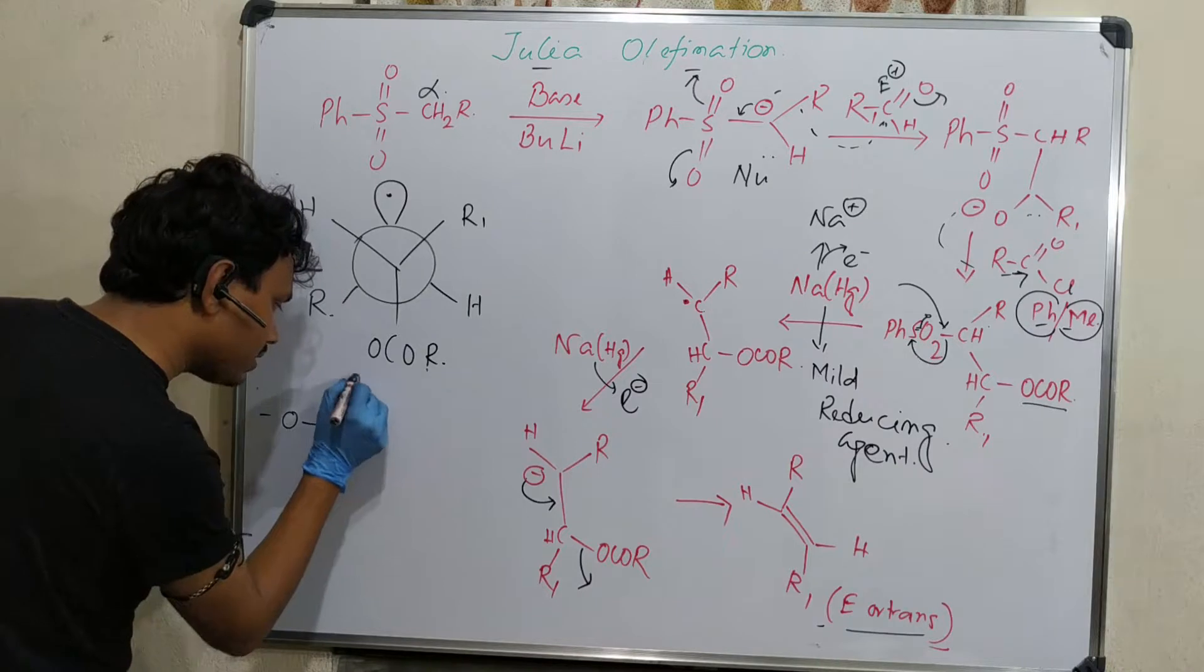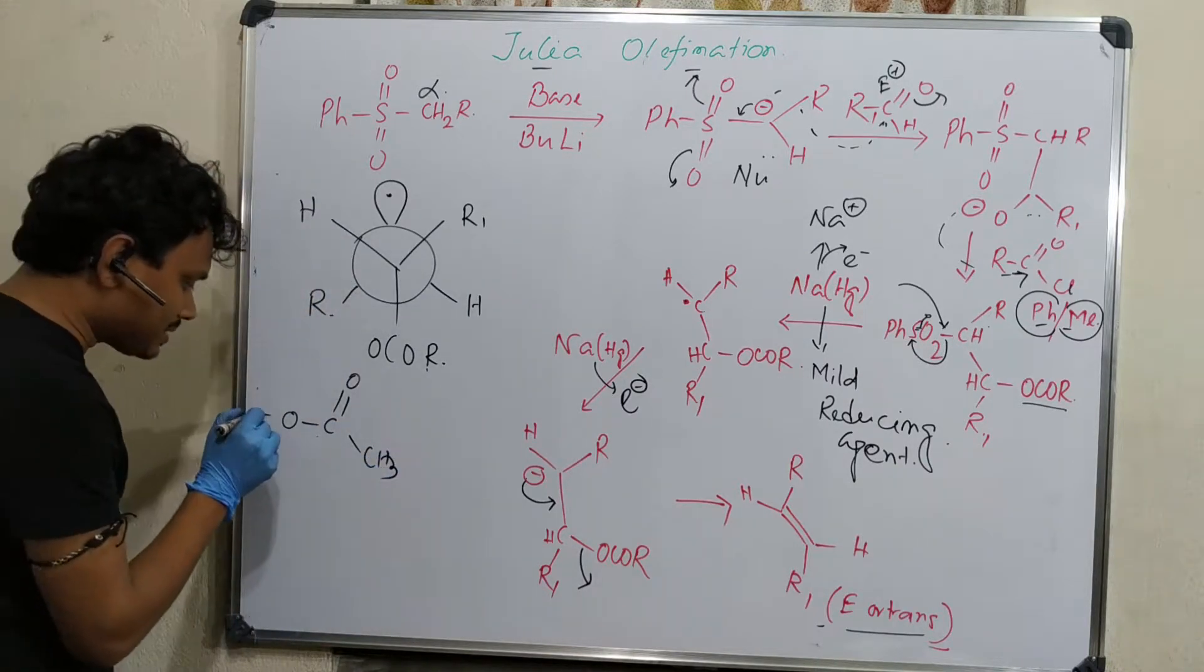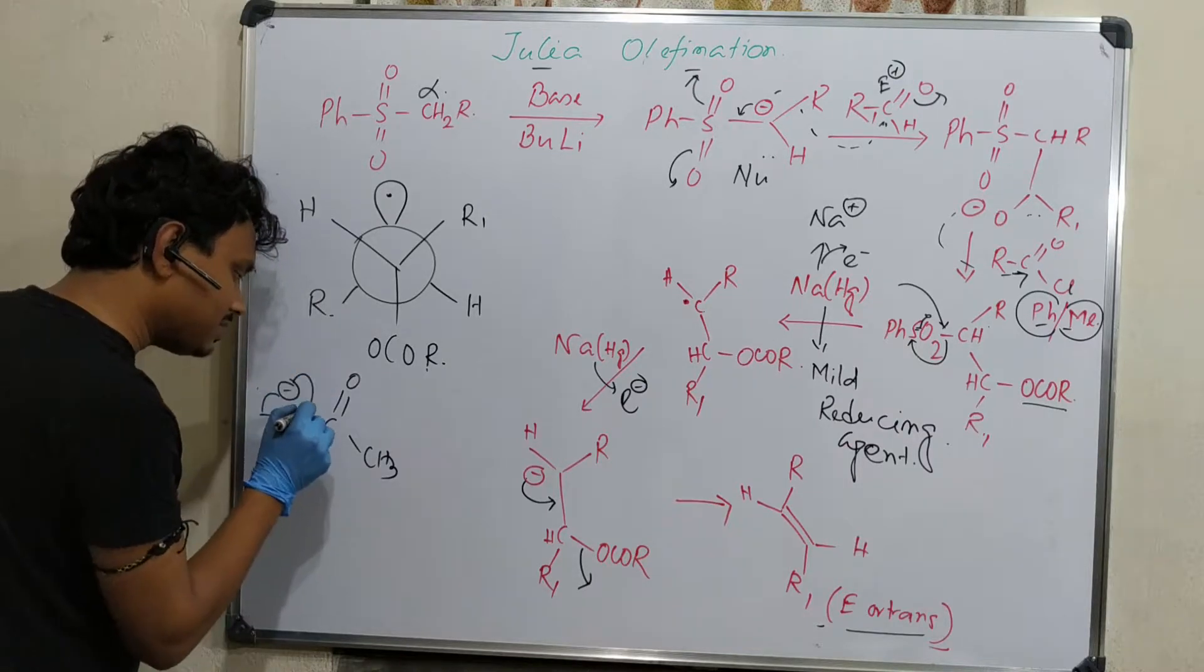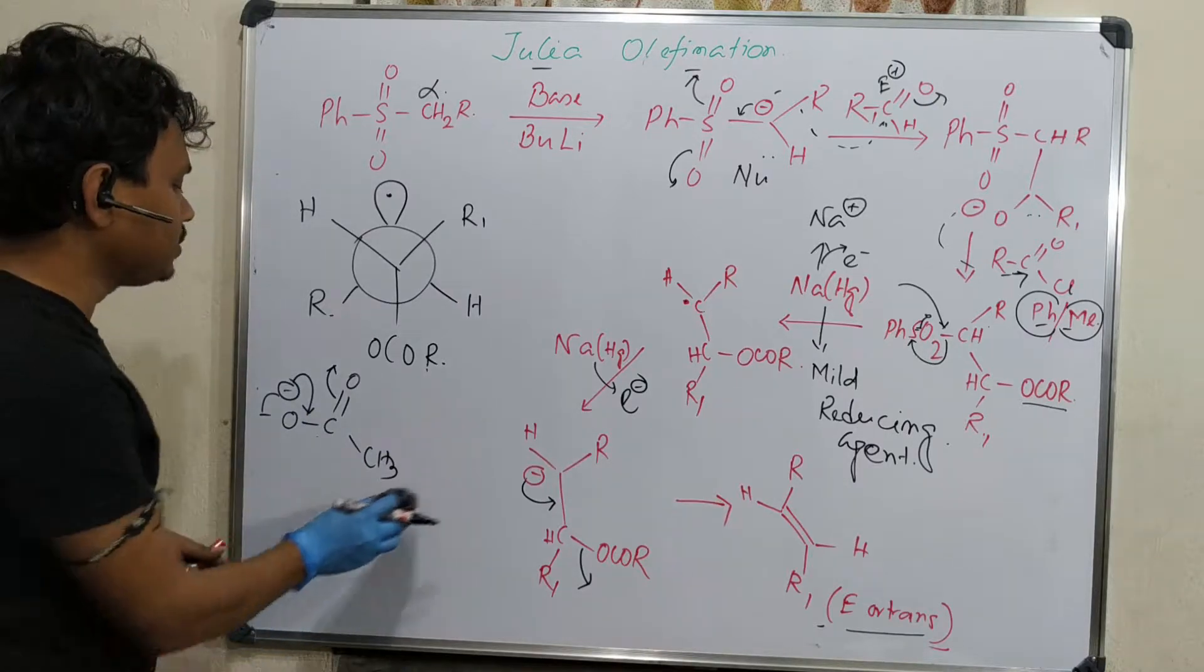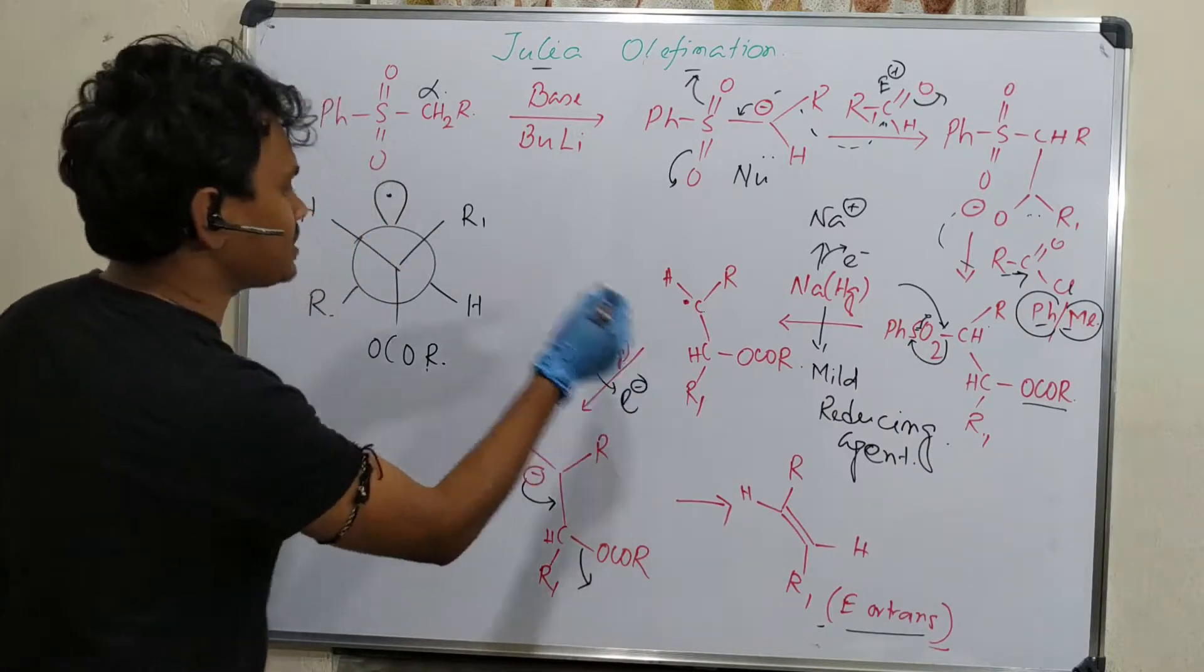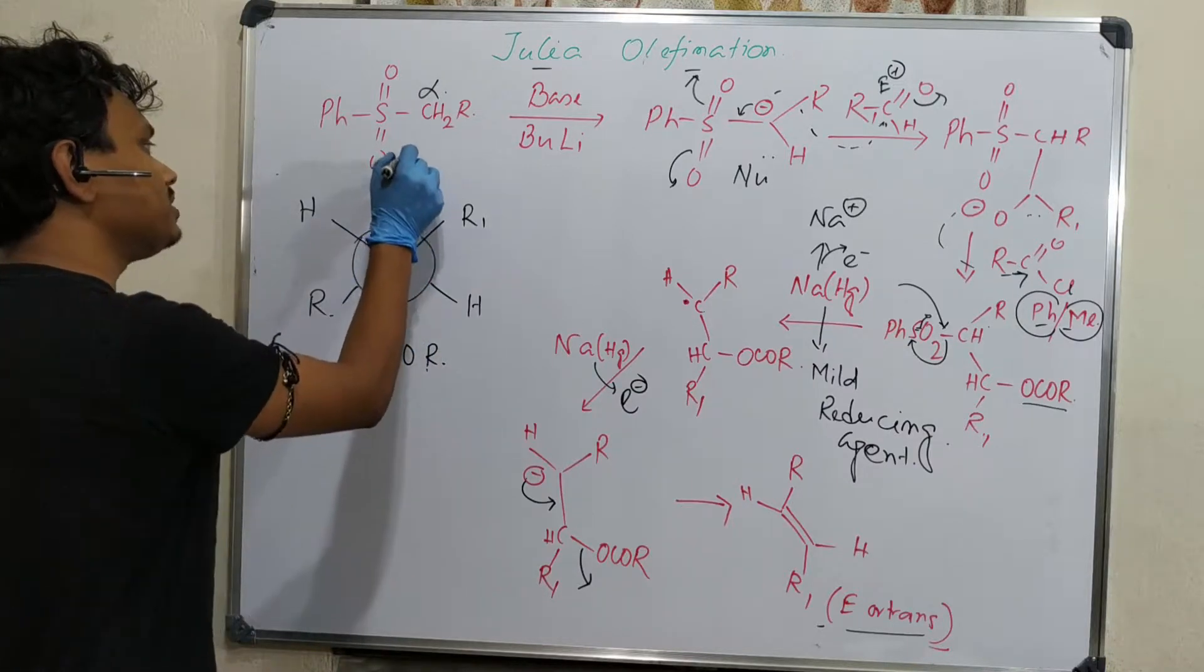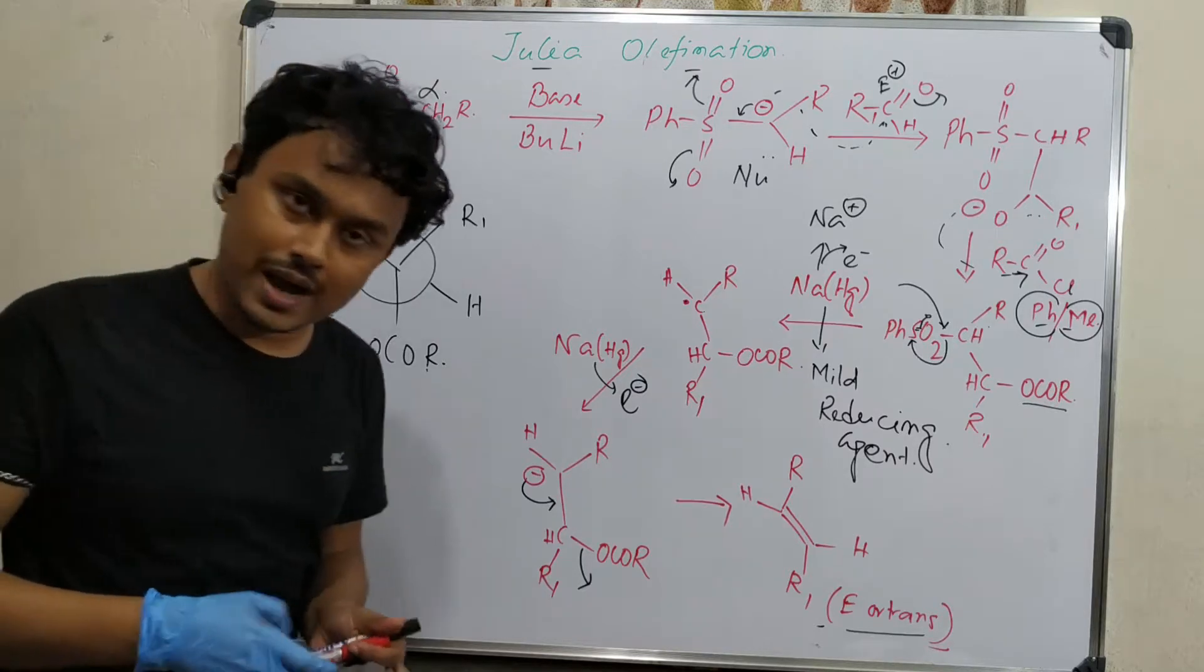This OCOR group is a good leaving group because if it leaves, it produces negative charge here that is resonance stabilized and delocalized. So the anion leaving group is stable, consequently it leaves efficiently. When the electron becomes an anion, it undergoes trans orientation.